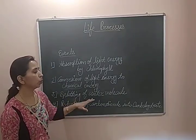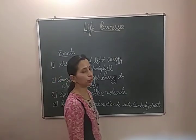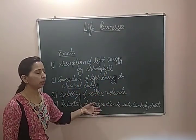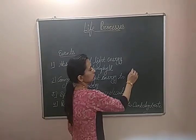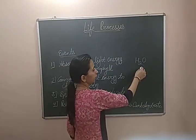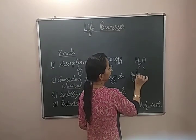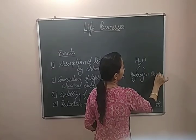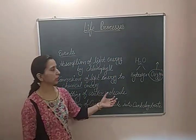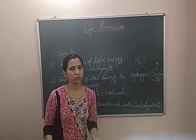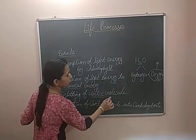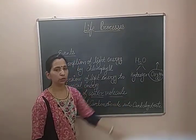The third event of photosynthesis is the splitting of water molecules. The water absorbed by the plant roots is utilized in the photosynthesis process, and the water molecules are split. These water molecules are split into hydrogen and oxygen. The oxygen formed is then liberated as a byproduct, because it is not required by the plant, so it is released outside as a byproduct.